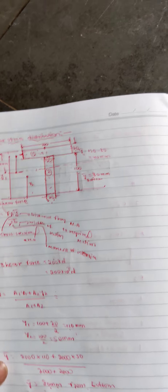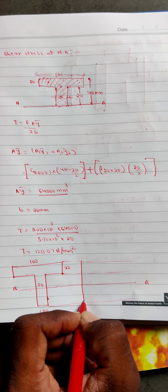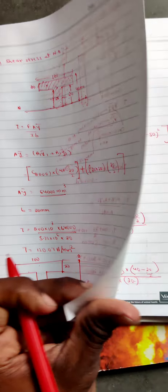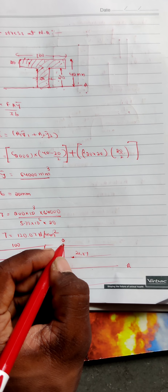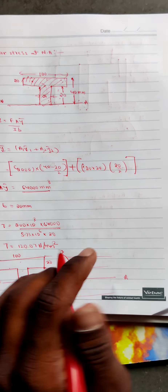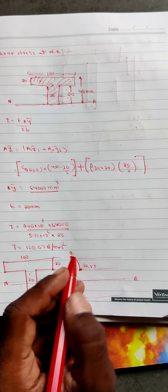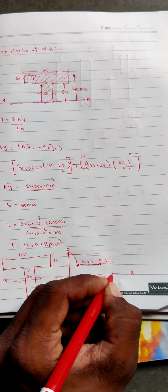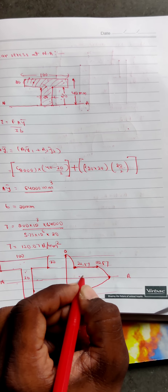We have now calculated all three shear stress values. Finally, we draw the shear stress distribution diagram for the T-section. The baseline shows top and bottom fiber shear stress as zero. At the flange-web junction, Tau 1 = 22.51 N/mm², shown as a parabolic curve. At the web-flange junction, it jumps to Tau 2 = 112.57 N/mm². At the neutral axis, Tau = 120.07 N/mm², also parabolic. Below the neutral axis it gradually decreases back to zero.